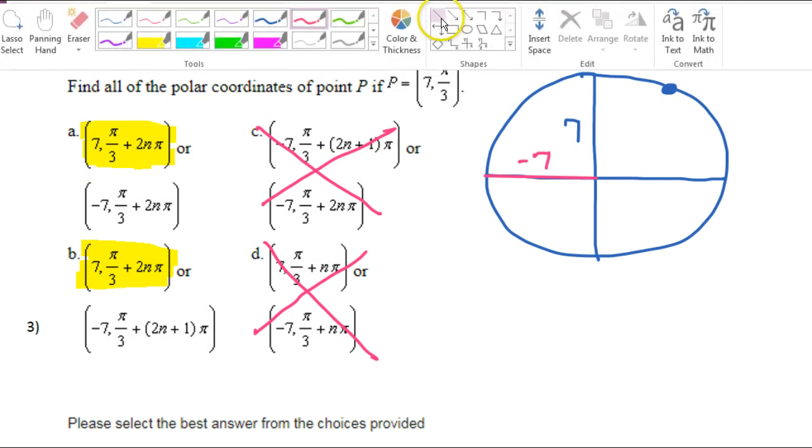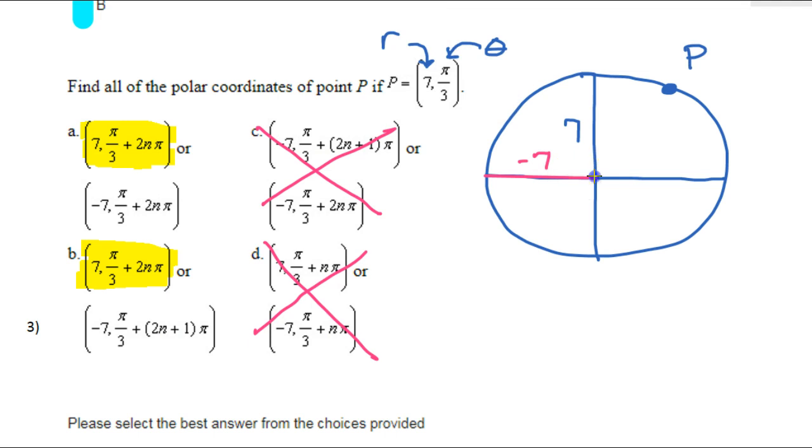So for starters, you know what? Maybe I'll leave this. Maybe I'll draw a fresh one. So here I am. I went negative 7. Now I need to rotate around until I get to here. Now, if I rotate, so far I've gone pi over 2. It's half of pi. If I go to here, I've gone pi.